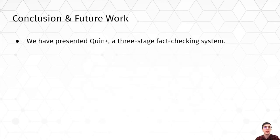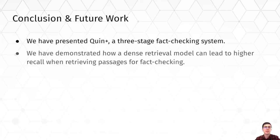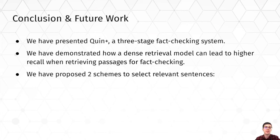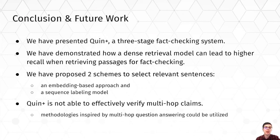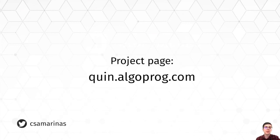To sum up, we have presented QINPlus, a three-stage fact-checking system able to verify open domain claims using a large corpus or web search results. We demonstrated how a dense retrieval model leads to higher recall when retrieving passages for fact-checking, and proposed two schemes to select relevant sentences: an embedding-based approach and a sequence labeling model. A major limitation of QINPlus is that it cannot verify multi-hop claims; methodologies inspired by multi-hop question answering could be utilized to tackle this. You can check out the demo and source code on the provided page. Thanks a lot for your time.